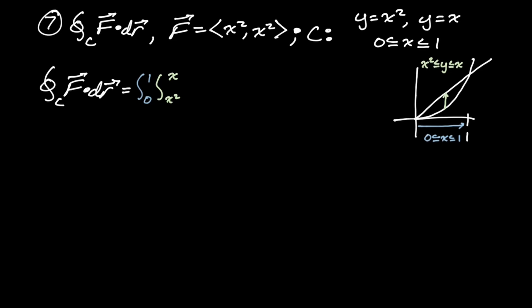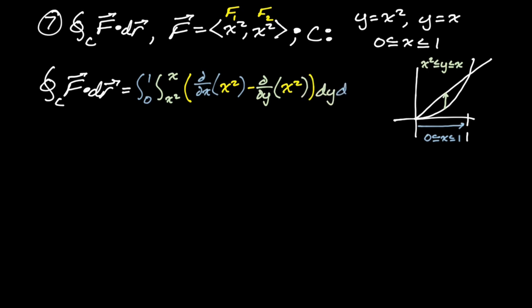I like to label F1 and F2. Our integrand will be the partial of F2 with respect to x, minus the partial of F1 with respect to y. So that's the partial of x² with respect to x, minus the partial of x² with respect to y. The partial of x² with respect to y is just zero, so the integrand cleans up to just x².